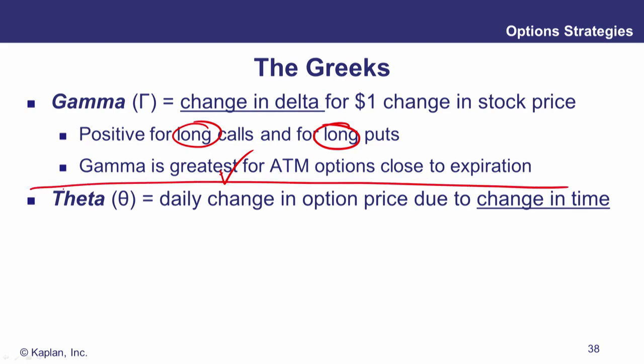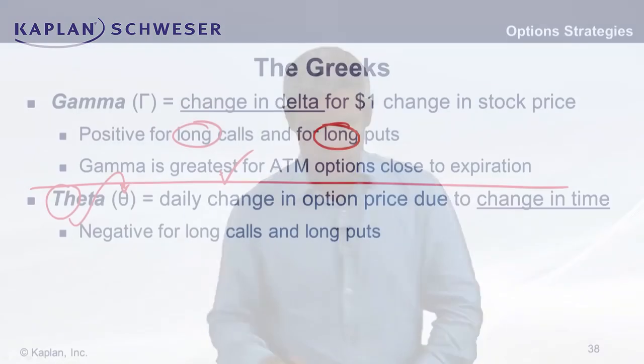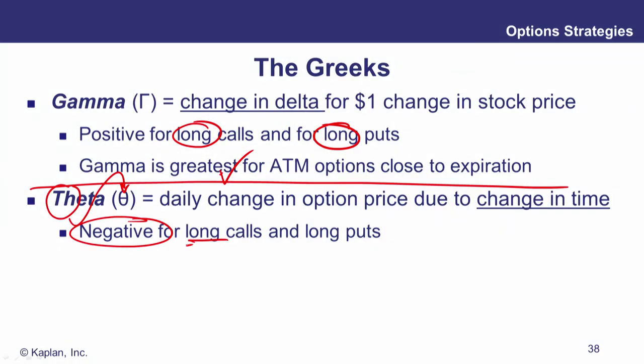Theta — T for theta, T for time — is the impact of changing time on an option. Time is against option holders: if nothing else happens and time passes, the option's time value will usually fall from positive down to zero. Time decay hurts the holder of options, so theta is negative for long option positions.